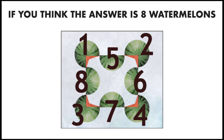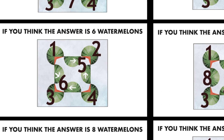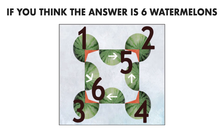If you think the answer is 6 watermelons, another theory is to examine how many melons it would have taken to create this image. In that case, the answer would be 6. This is achieved by adding the 4 three-quarter melons to 2 full melons which were cut in half to create the 4 halves.